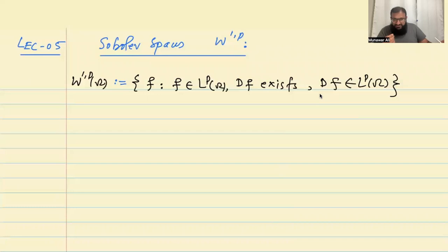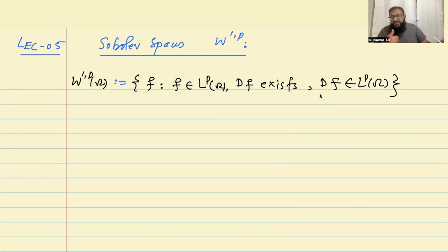You take a function — the function must be in Lp, and its first derivative should also be in Lp. I call this space W1P on omega, and this is what we call a Sobolev space. The function should be in Lp and its derivative should be in Lp on omega, where P can be anything between 1 and infinity.